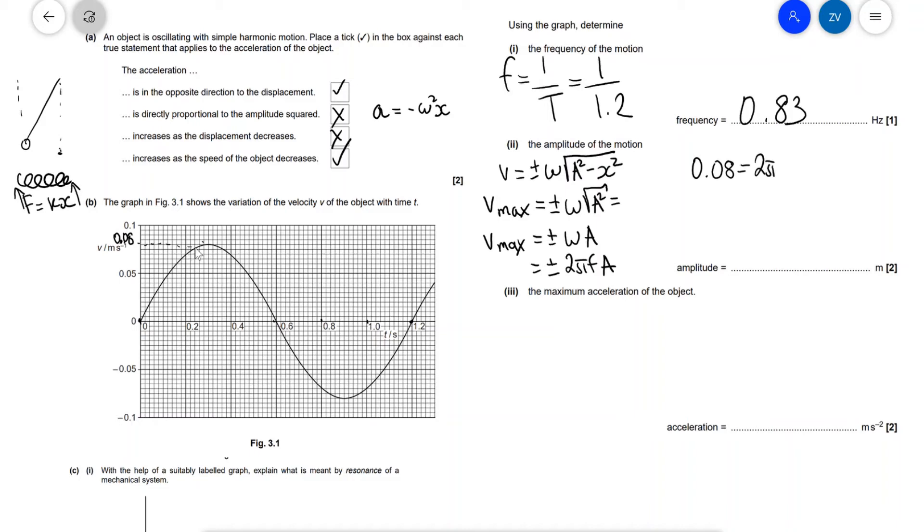Okay, well our maximum speed from the graph is equal to 0.08, so this will be equal to 2 pi times the frequency which is 0.83 times the amplitude. So I can just rearrange for the amplitude which will be equal to 0.08 divided by 2 pi times 0.83, and if I put that into a scientific calculator I'm going to get that my amplitude will be equal to 0.015 meters. For part 3, the maximum acceleration of the object...